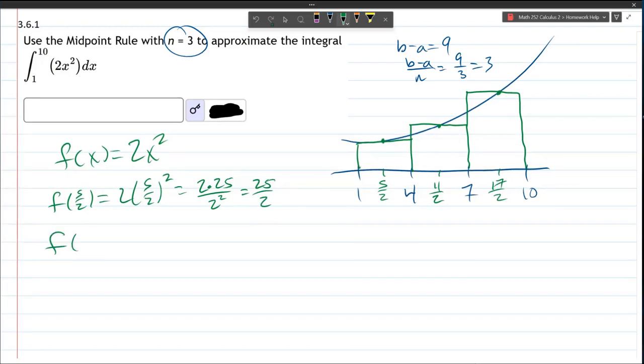We're going to take 11 halves and evaluate it. That should be a 2. 11 squared is 121.